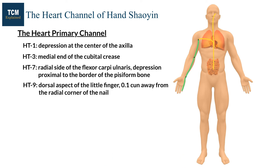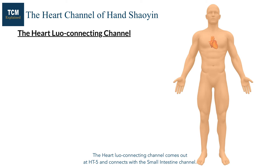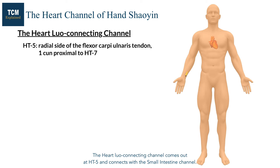The heart luo connecting channel comes out at Heart 5 and connects with the small intestine channel. It enters the heart and connects with the root of the tongue and the eye.